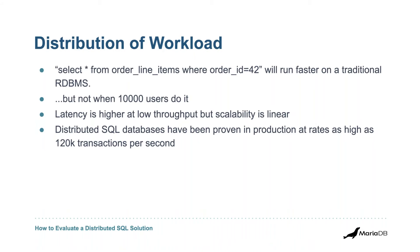The key feature is distribution of the workload, but distribution comes at a cost. If you do a SELECT * FROM order_line_items WHERE order_id = 42, returning about eight rows, that's going to be faster on a traditional relational database with one node — but it won't necessarily be faster when 10,000 users do that same query. We're worried about latency at scale, not at low throughput. This is a truck rather than a two-door sports car. Distributed SQL has been deployed in production at rates as high as 120 transactions per second — really look at your throughput and latency requirements.